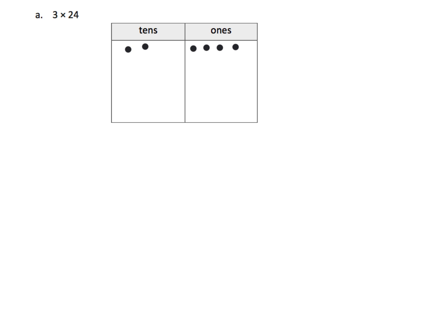Because we're multiplying by three, that means we need to see three rows of 24. So there's one row, here's another row of two tens and four ones, and here's our third row. So this represents three groups of 24.